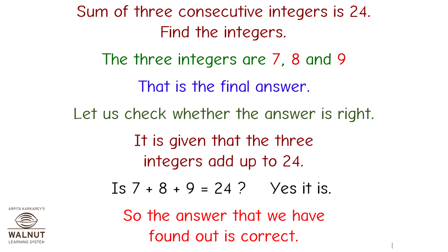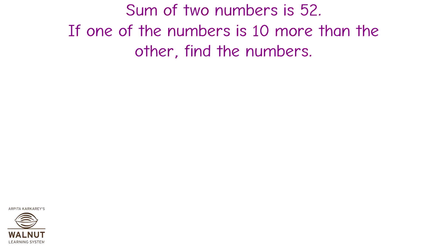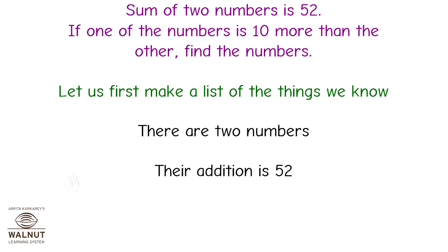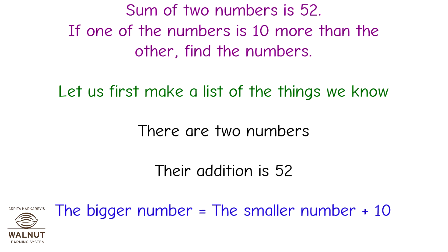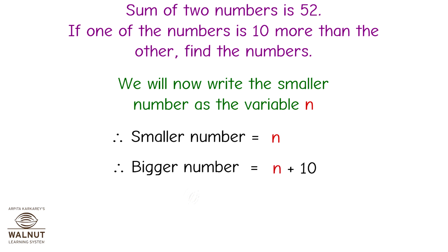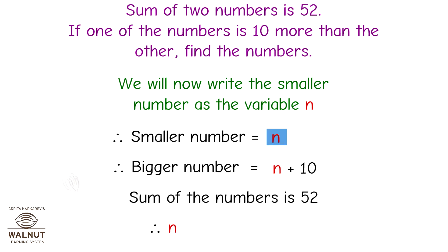Let's look at another word problem. The sum of two numbers is 52. If one of the numbers is 10 more than the other, find the numbers. There are two numbers whose sum is 52, and the bigger number equals the smaller number plus 10. Let the smaller number be n, so the bigger number is n plus 10. Therefore n plus (n plus 10) equals 52.